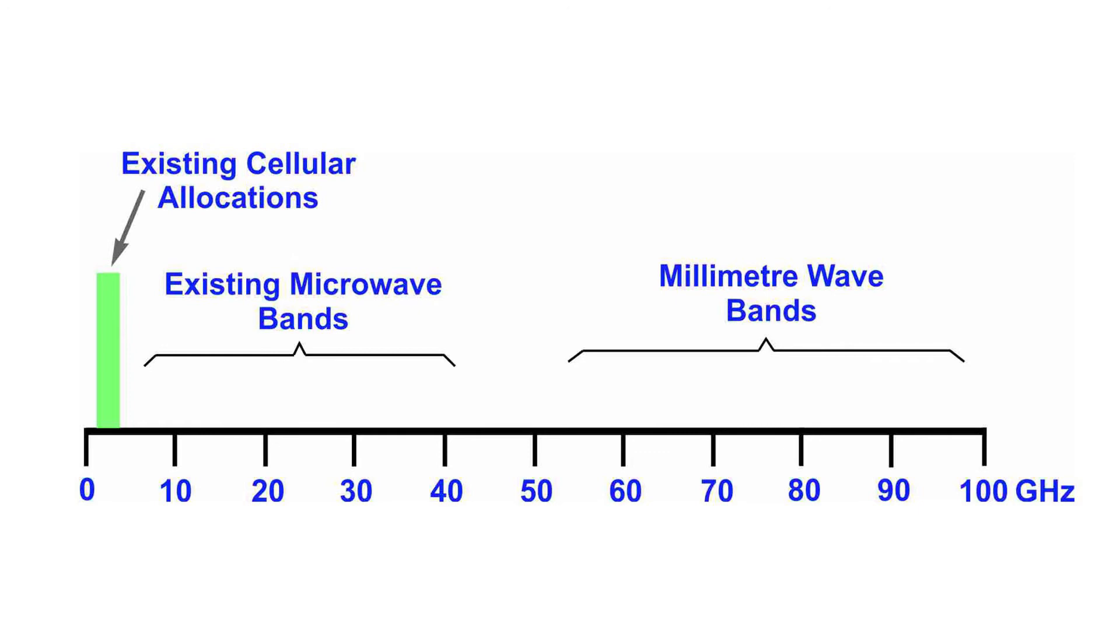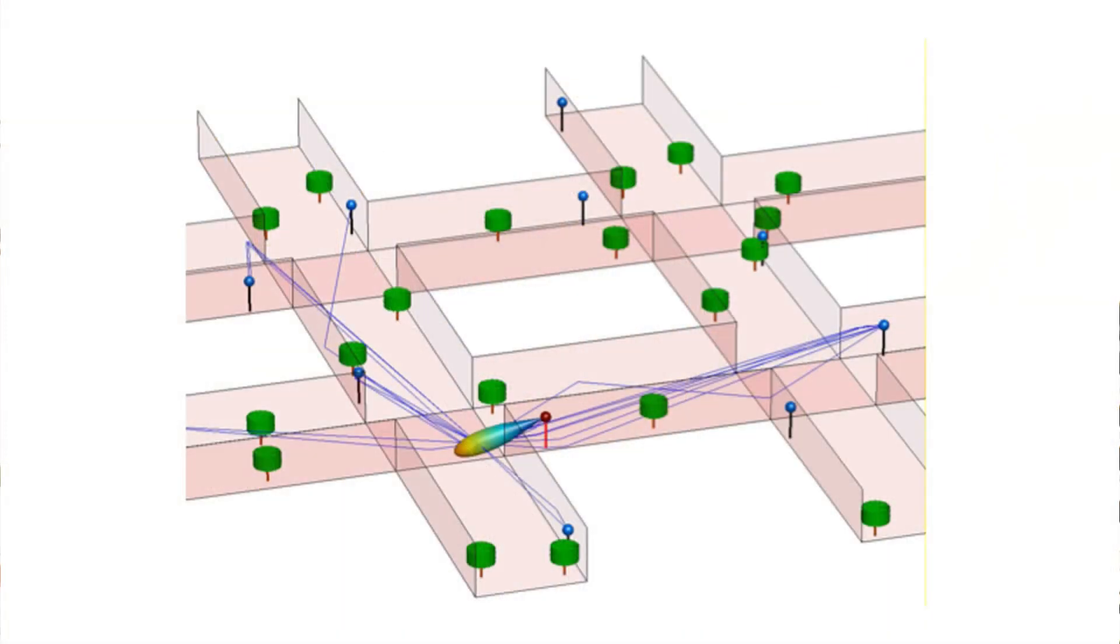This makes it very attractive for providing access in hotspot regions. And if we do this, we could then apply something like software-defined networks where our control plane goes out over, say, 700 megahertz, giving ubiquitous coverage. And then we connect into our communications channel, our data plane, through the most appropriate technology that's available in that region.